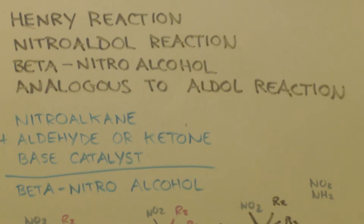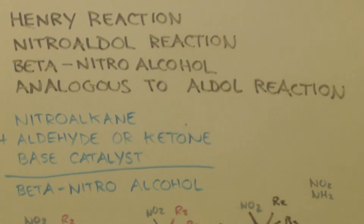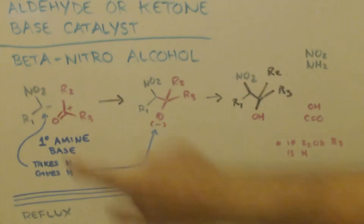You're making a beta nitro alcohol. If you know the aldol reaction, it's pretty much analogous to that. You get a nitro alkane, you get an aldehyde or a ketone, and you get some kind of base catalyst. You mix them together and you come up with a beta nitro alcohol.